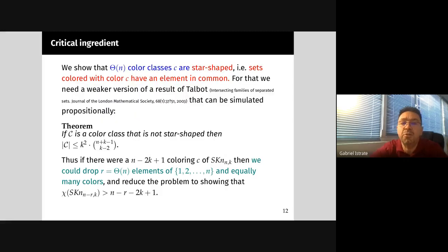The way to do it is we define a color class of the Schreiber graph to be star-shaped. Remember that vertices correspond to sets. We call a color class to be star-shaped if all the sets colored with that color have an element in common. There is a theorem of Talbot that gives an upper bound on the size of a color class that is not star-shaped. We can't really make use of this result because we will need to simulate it propositionally. Instead, we proved a weaker version which we can actually simulate propositionally.